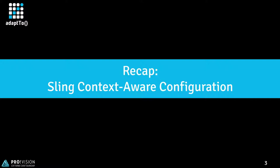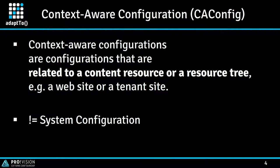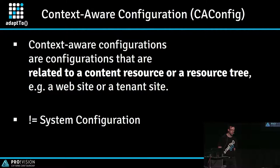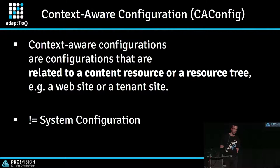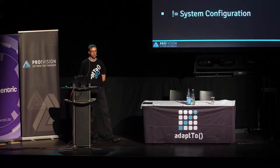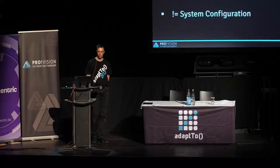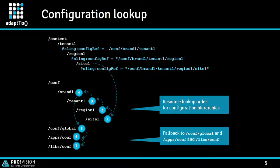A short look back: what is Sling context-aware configuration? Context-aware configuration is about configuration related to a certain subtree in your resource hierarchy. That means it's not system configuration done by OSGi, but configuration which is different for each site, each tenant, or each region. This may be a feature flag enabling some features on one site and not another, or domain names of different sites — configuration related to a specific content subtree.